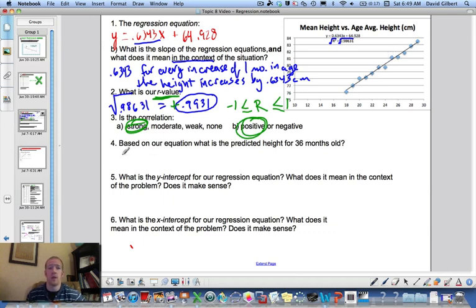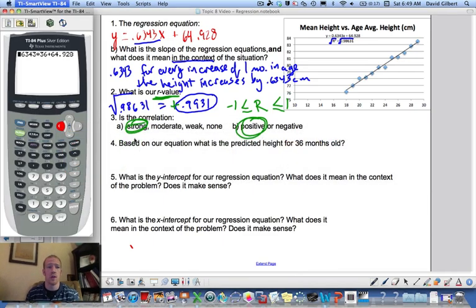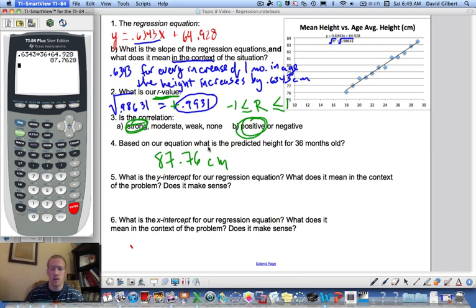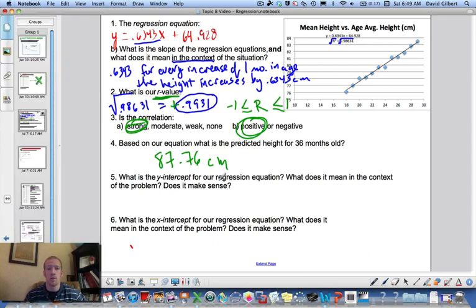So based on the equation, what is the predicted height for a 36 month old? Well, just go to your calculator, plug that in. 0.6343 times 36 plus 64.928, gives us 87.76. Does that make sense? So why don't we take this and convert it to inches? So we have to divide by 2.54, and that's almost 35 inches. Should a 36 month or a 3 year old be about 35 inches or about 3 feet? Yeah, that makes sense I guess.